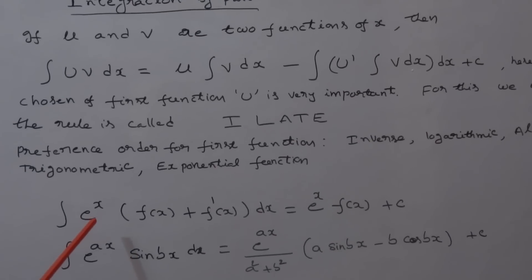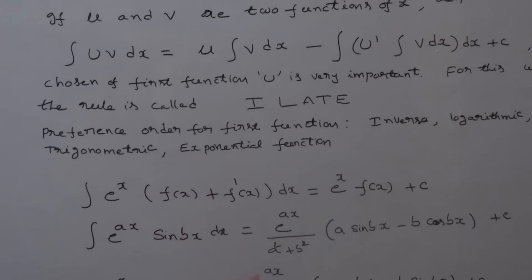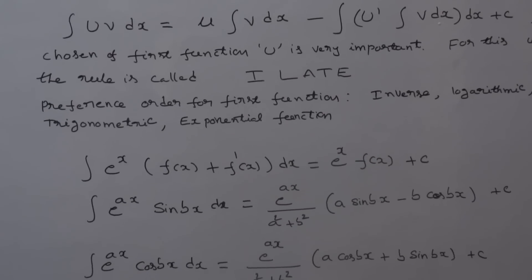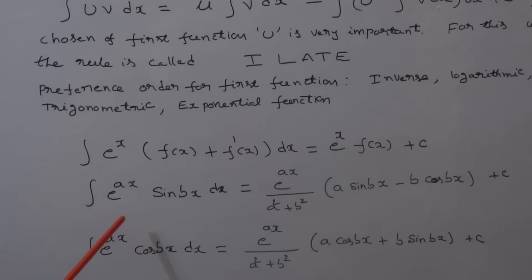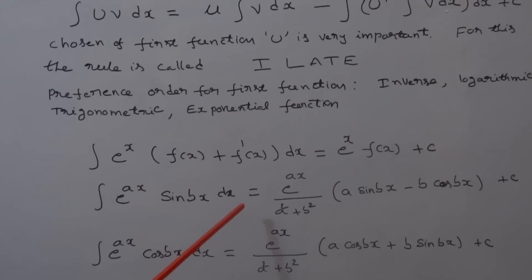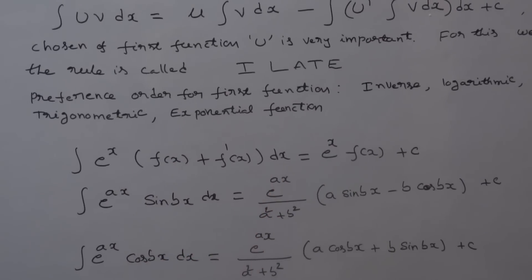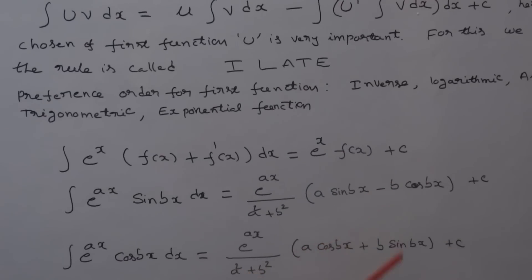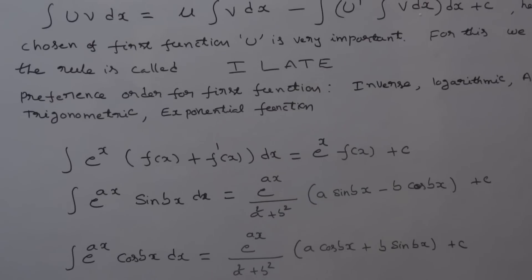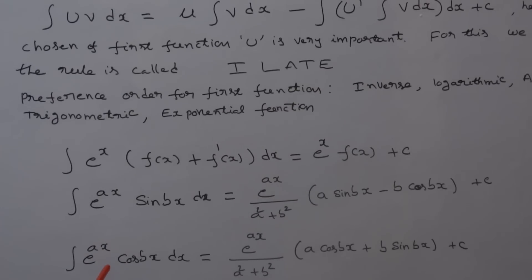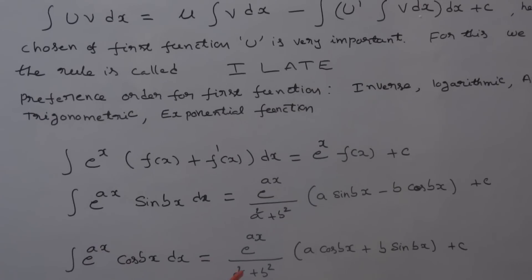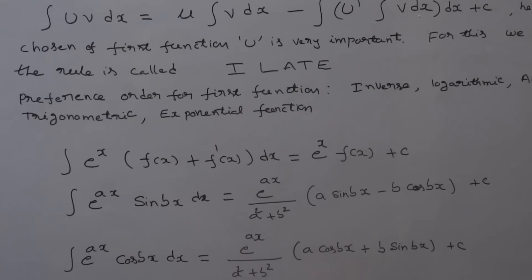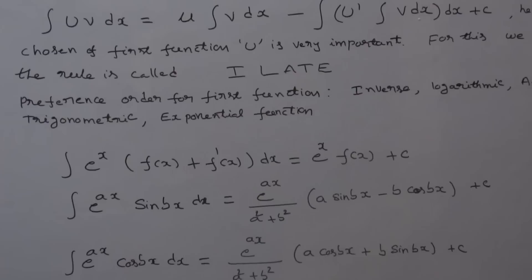Integral of e^x [f(x) + f'(x)] dx is equal to e^x · f(x) plus c. Integral of e^(ax) · sin(bx) dx is equal to e^(ax) / (a² + b²) times [a sin(bx) - b cos(bx)] plus c. Integral of e^(ax) · cos(bx) dx is equal to e^(ax) / (a² + b²) times [a cos(bx) + b sin(bx)] plus c.